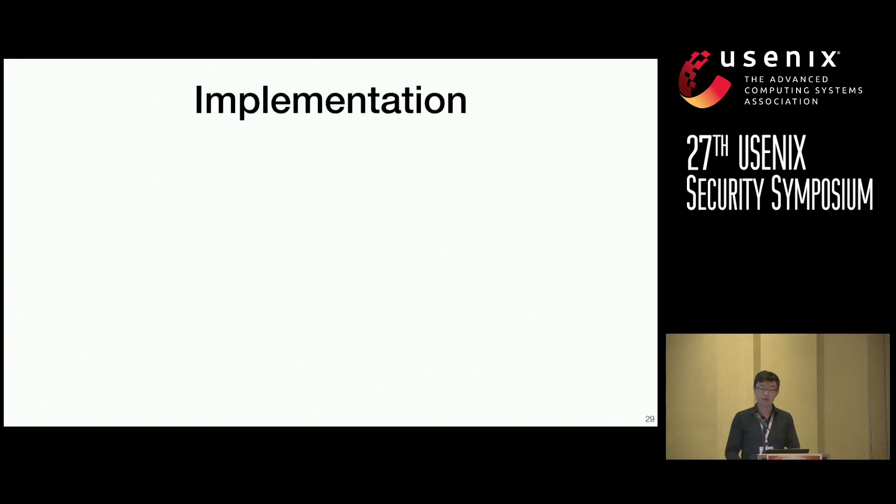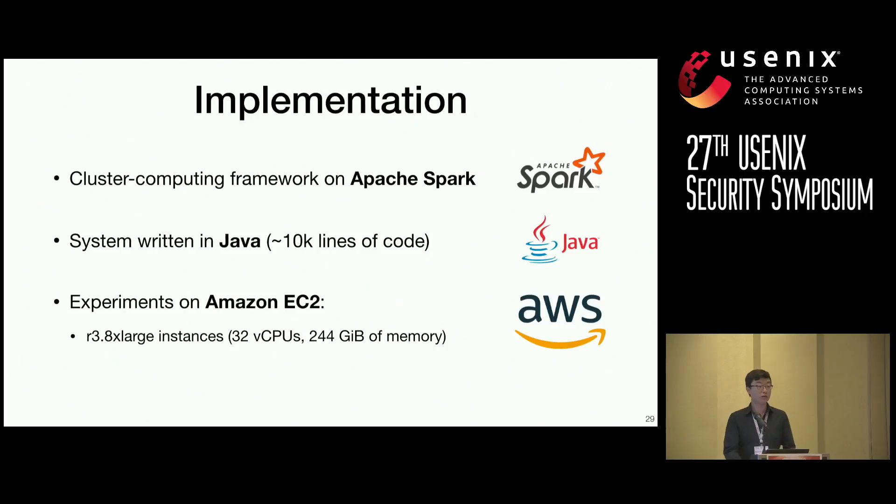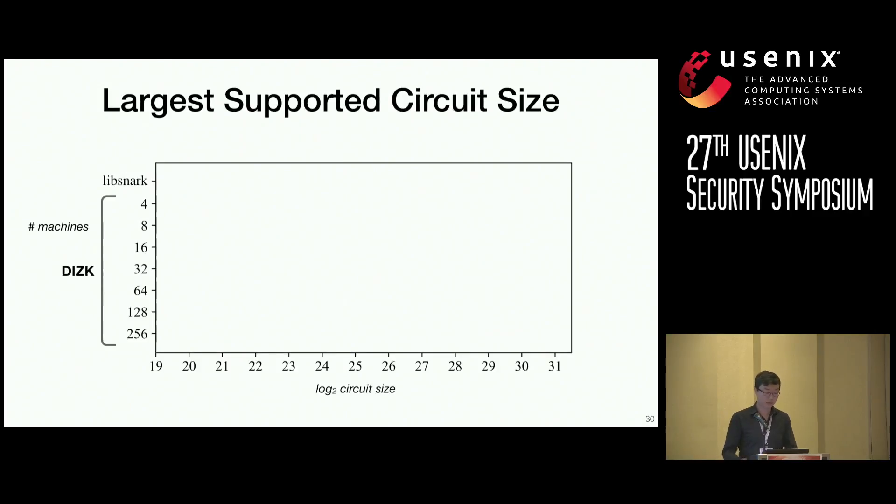So, we implemented the system and we used a cluster compute framework, Apache Spark. Our system is written in Java with approximately 10,000 lines of code. And we ran our experiments on Amazon EC2 using R38X large instances. Our evaluations show us some interesting patterns and properties, which I will now present.